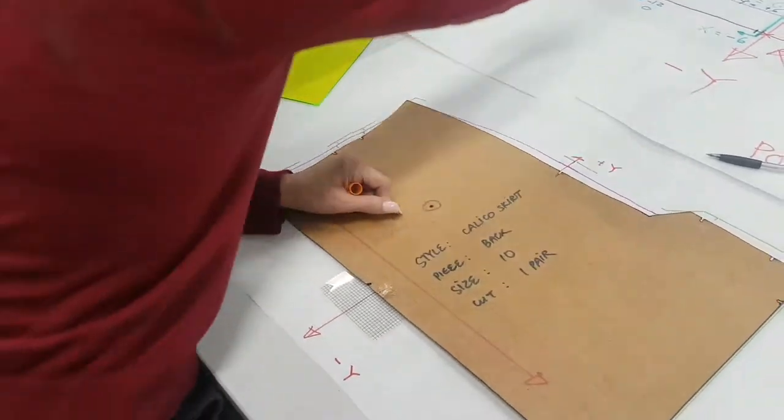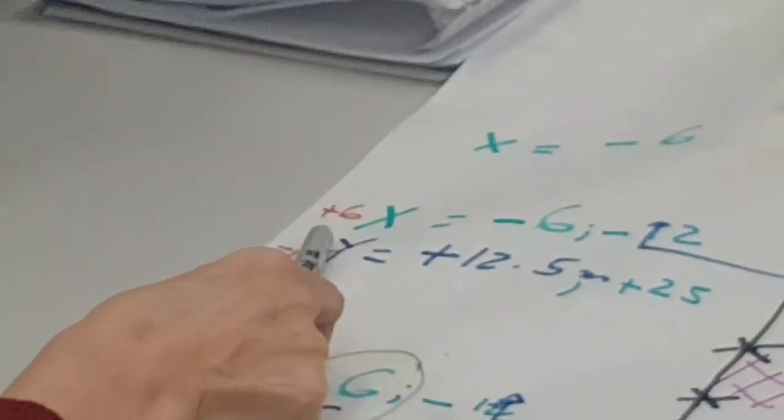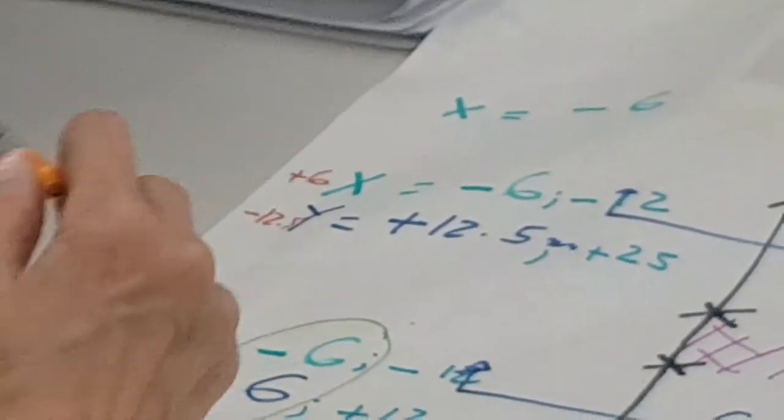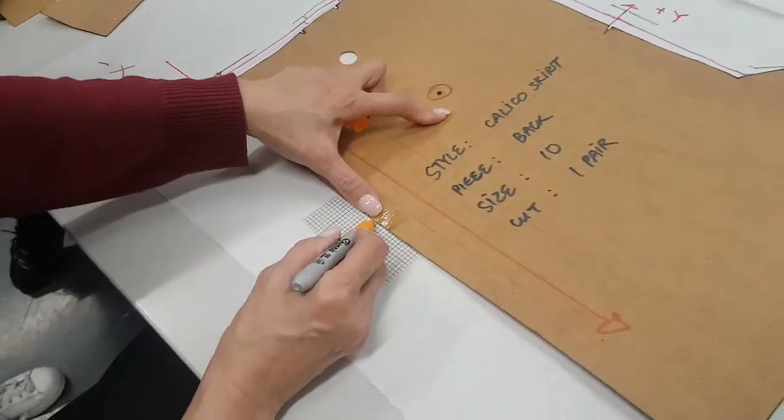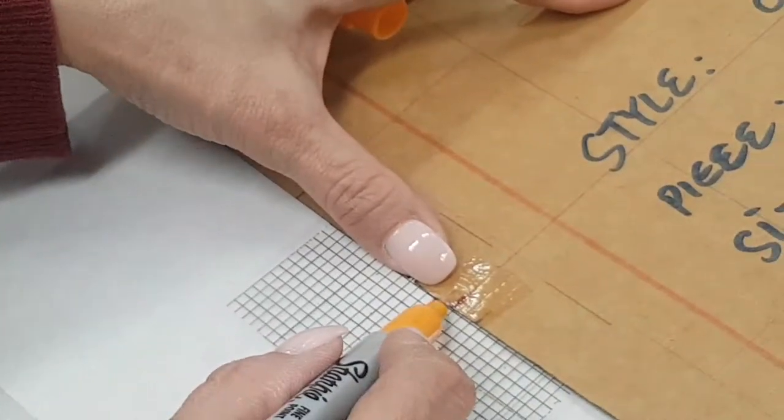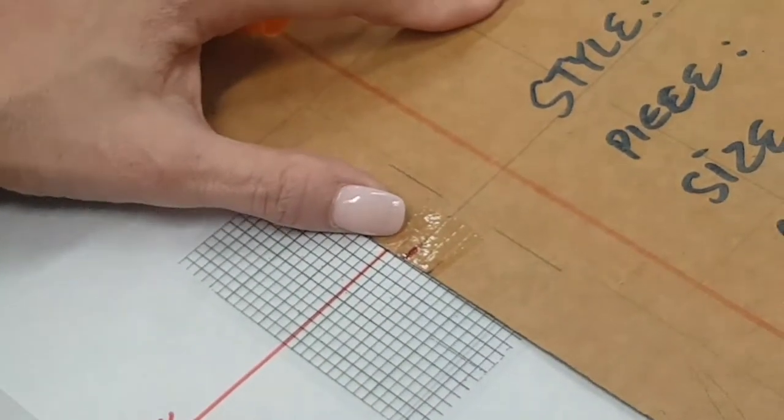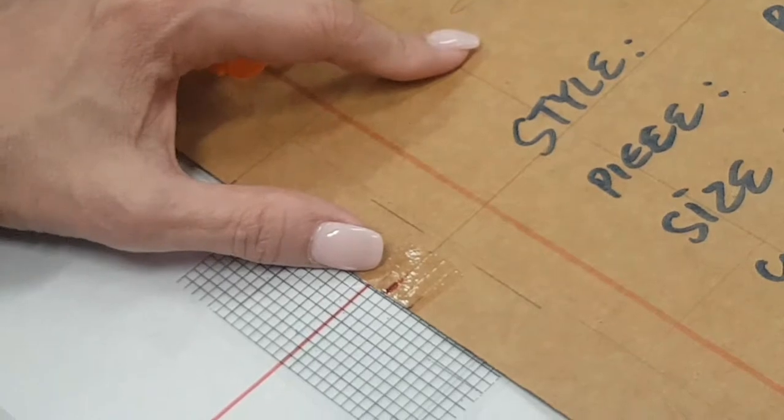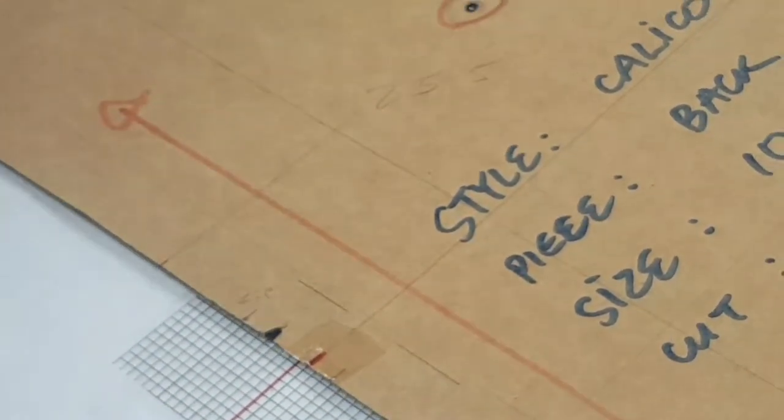The corner here. So the value will be positive 6 in the X, negative 12.5 in the Y. I only move the pattern by positive 6 in the X and negative 6 in the Y. I continue. Move another 6.5 negative value in the Y. And then mark over here.